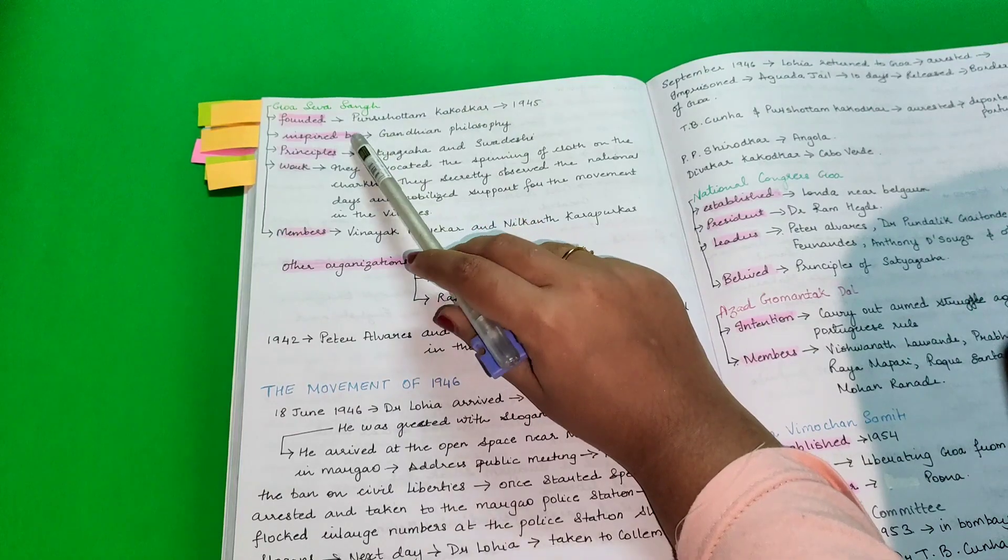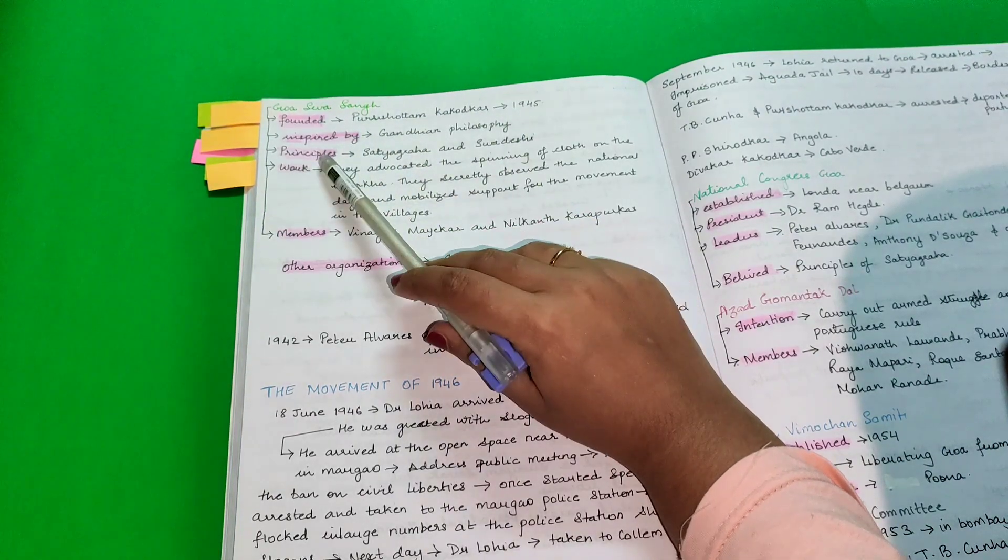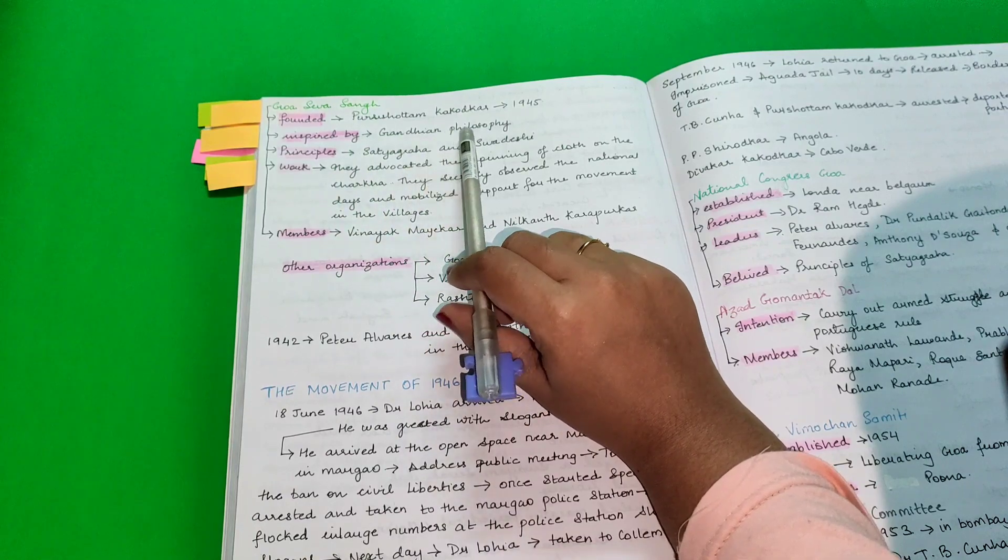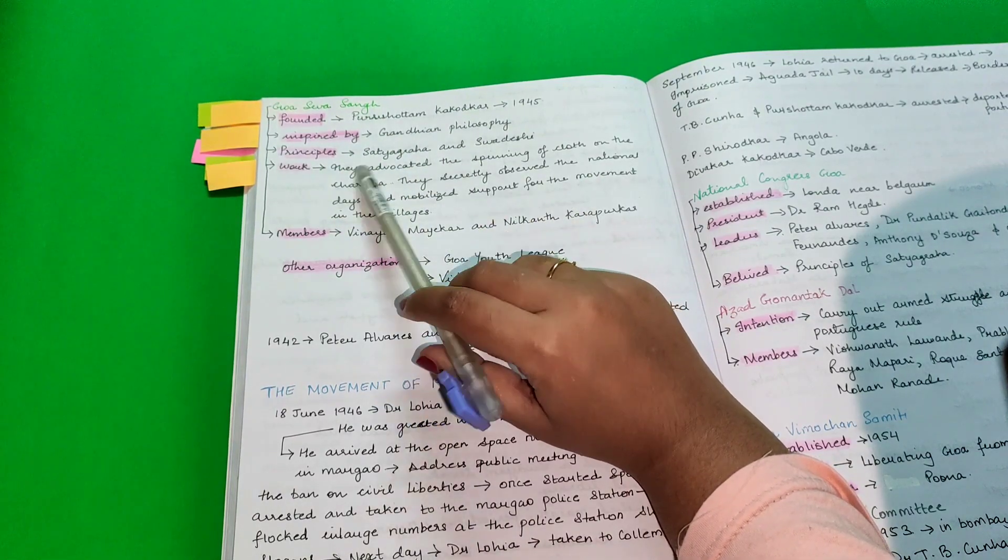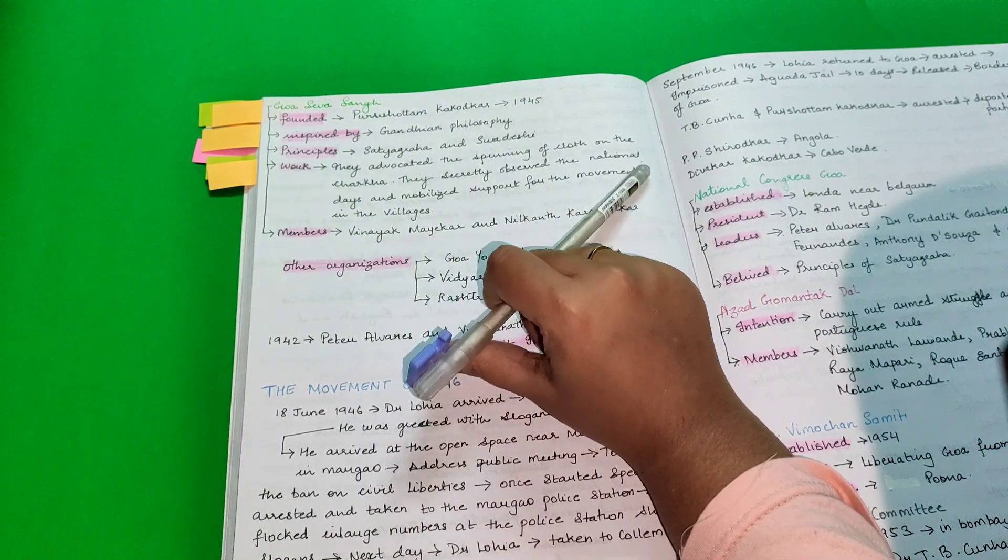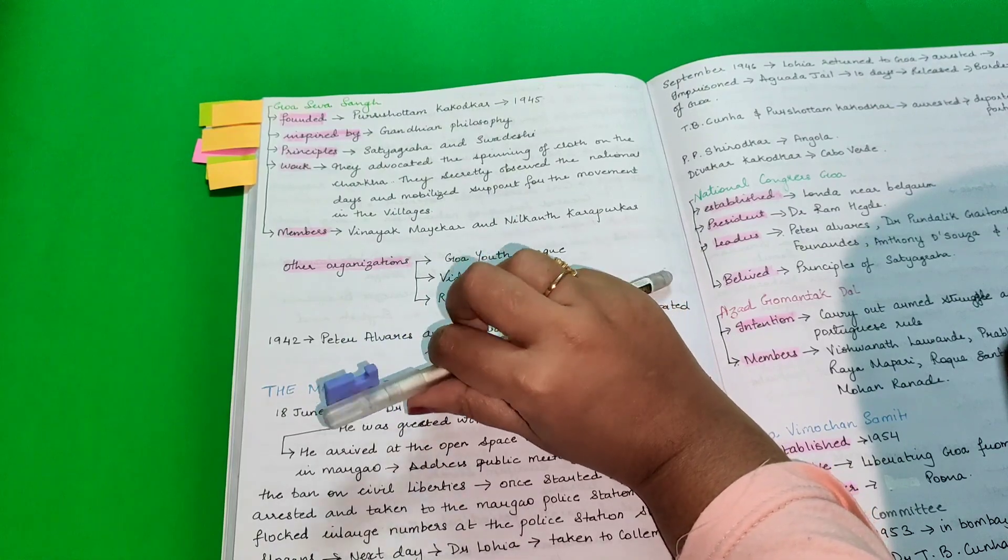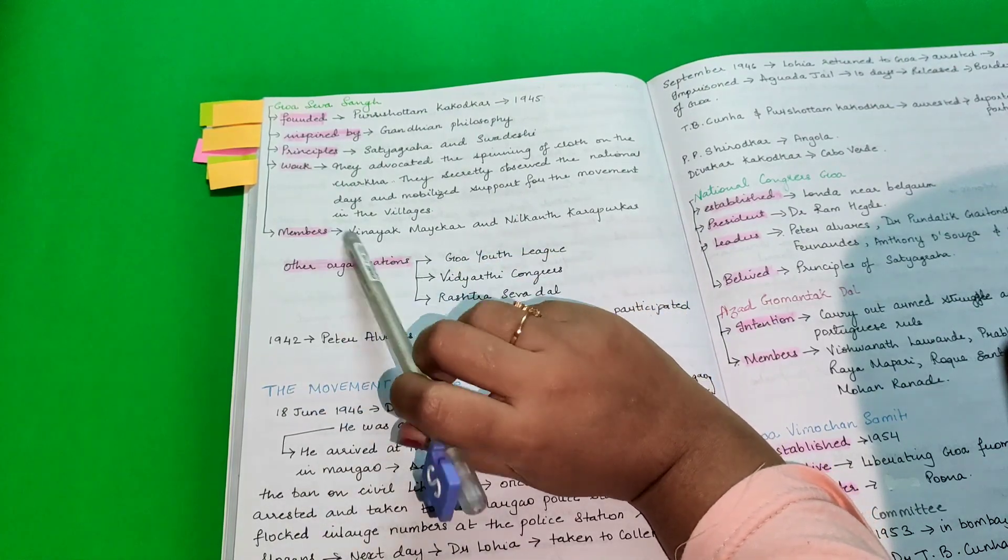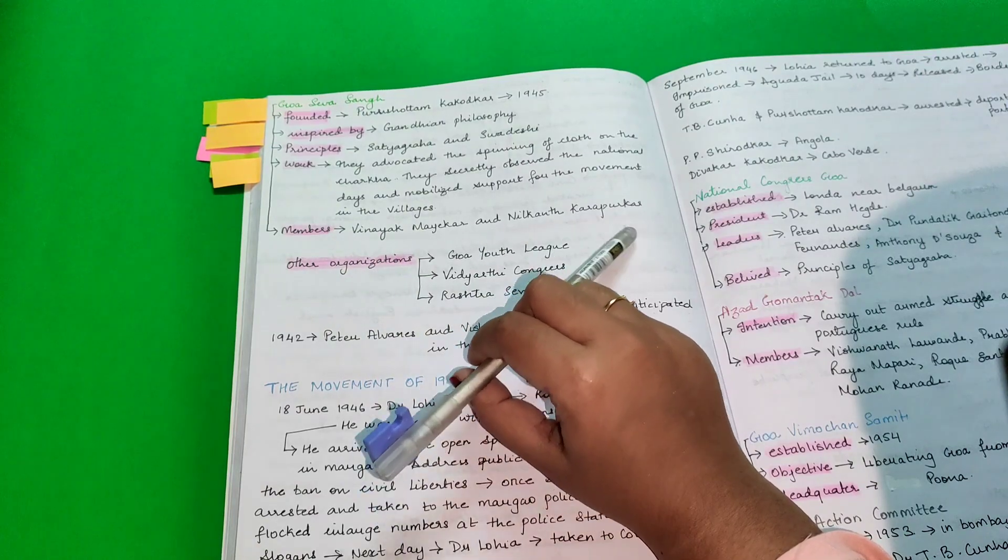Goa Seva Sangh was founded by Purushottam Kakodkar in 1945. It was inspired by Gandhian philosophy. They followed the principle of Satyagraha and Swadeshi. They advocated the spinning of cloth on Charkha. They secretly observed the national days and mobilized support for the movement in the villages. Members were Vinayak Maekar and Nilkand Karapurkar.